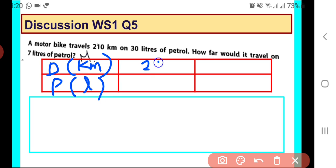Here it is given that 210 kilometers is traveled in 30 liters of petrol, and we have to find out how far would it travel. So we assume that it will travel x kilometers in 7 liters of petrol.